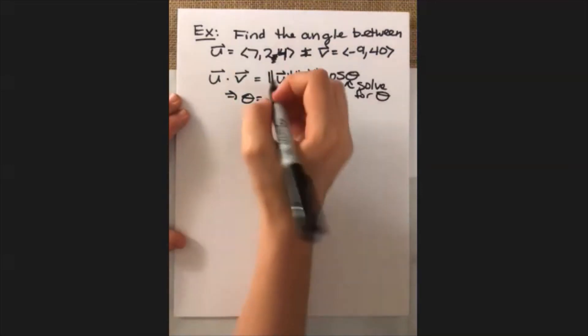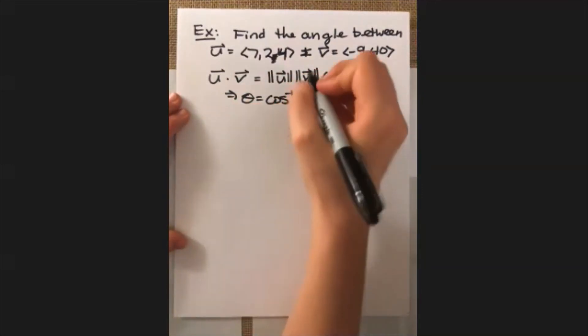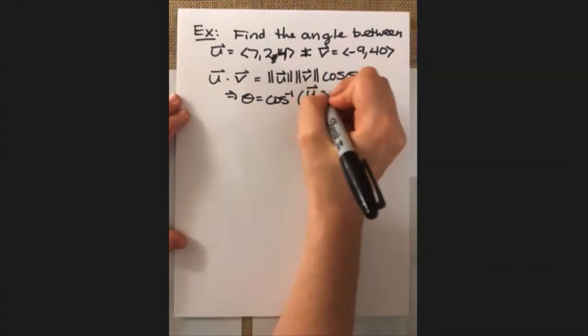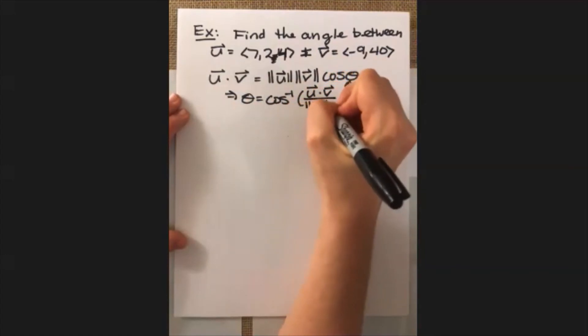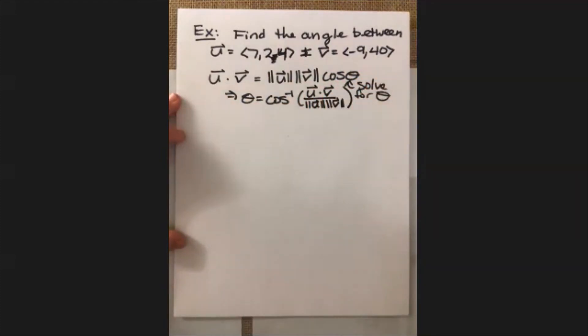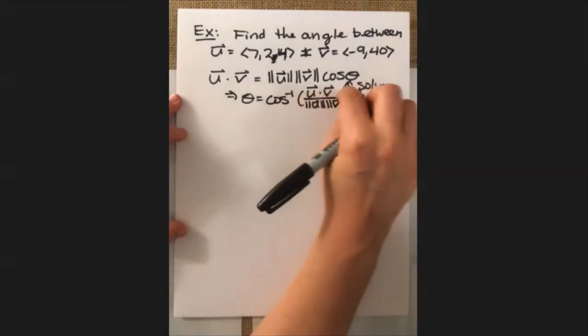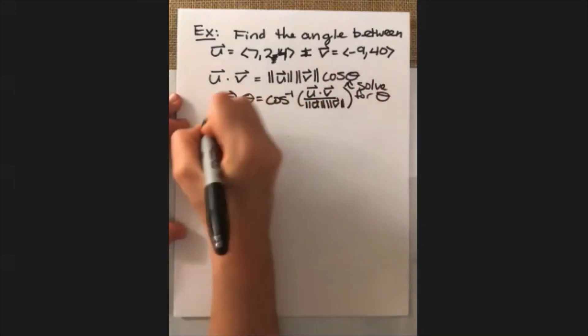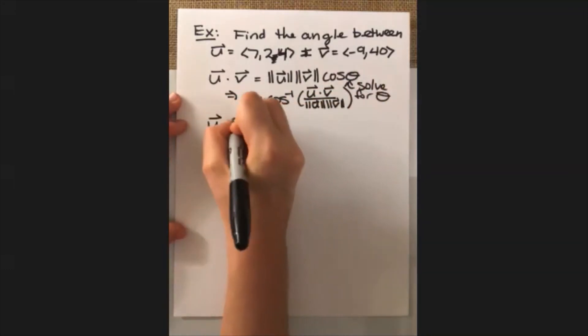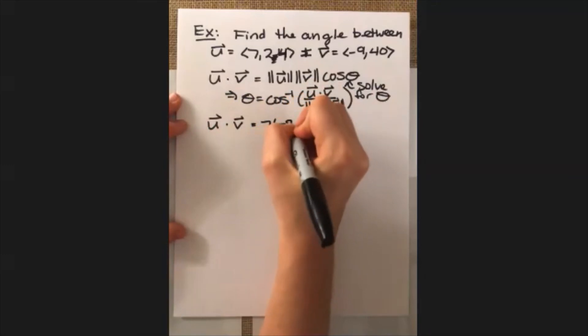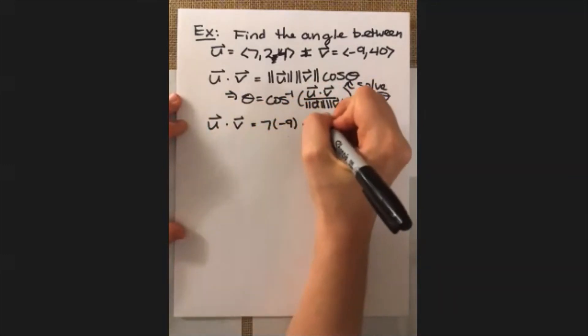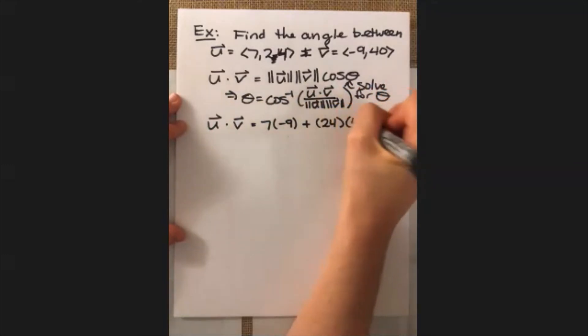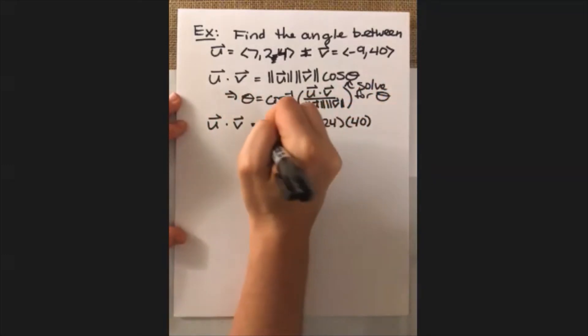We can rearrange this a little bit and we get that theta is equal to inverse cosine of the dot product between u and v divided by the product of their length. And we have that other expression for dot product that we worked with first. So we're going to use that to get this value here. We're going to find their lengths and then just plug it all in. So u dot v is equal to 7 times -9 and then plus 24 times 40. That's equal to 897.